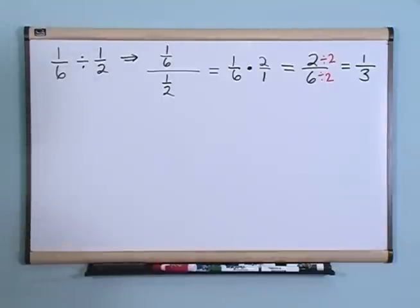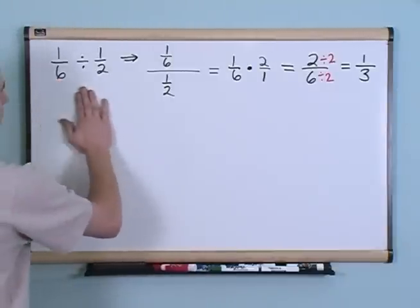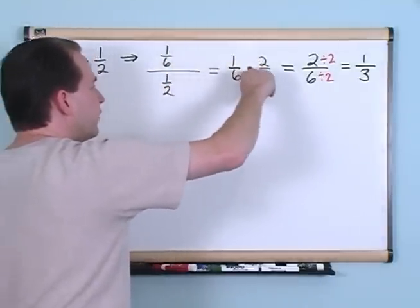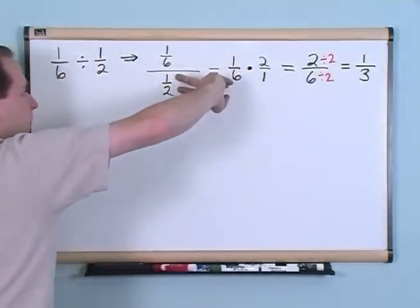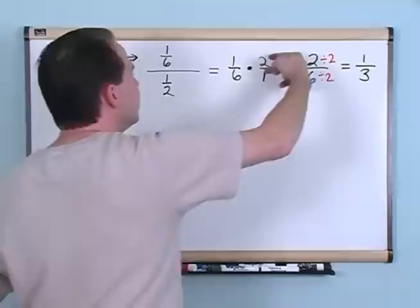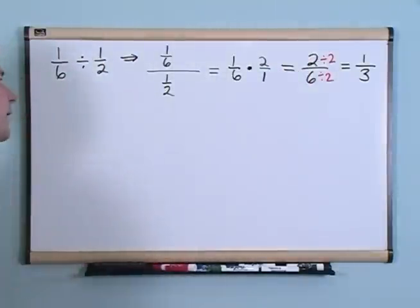The only thing that you need to know here is when you're dividing, you take the top number, and then you change this division into a multiplication, and then you take the bottom fraction and you flip it over, which is what we did here. 1 over 2 became 2 over 1, and then you can multiply them.